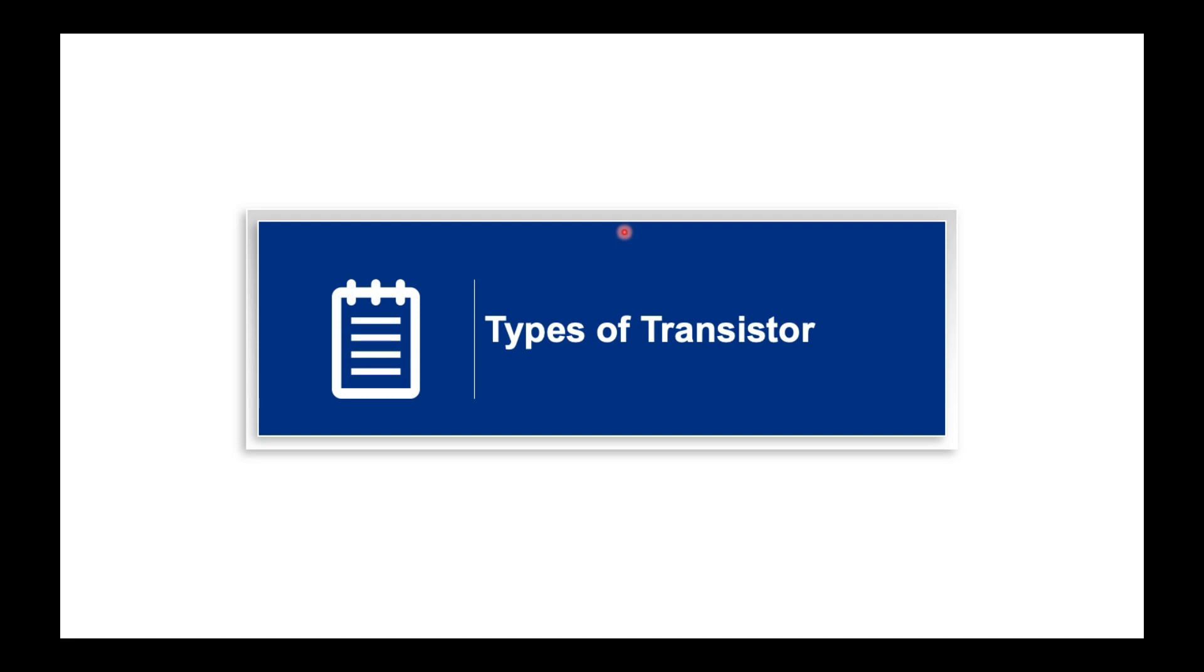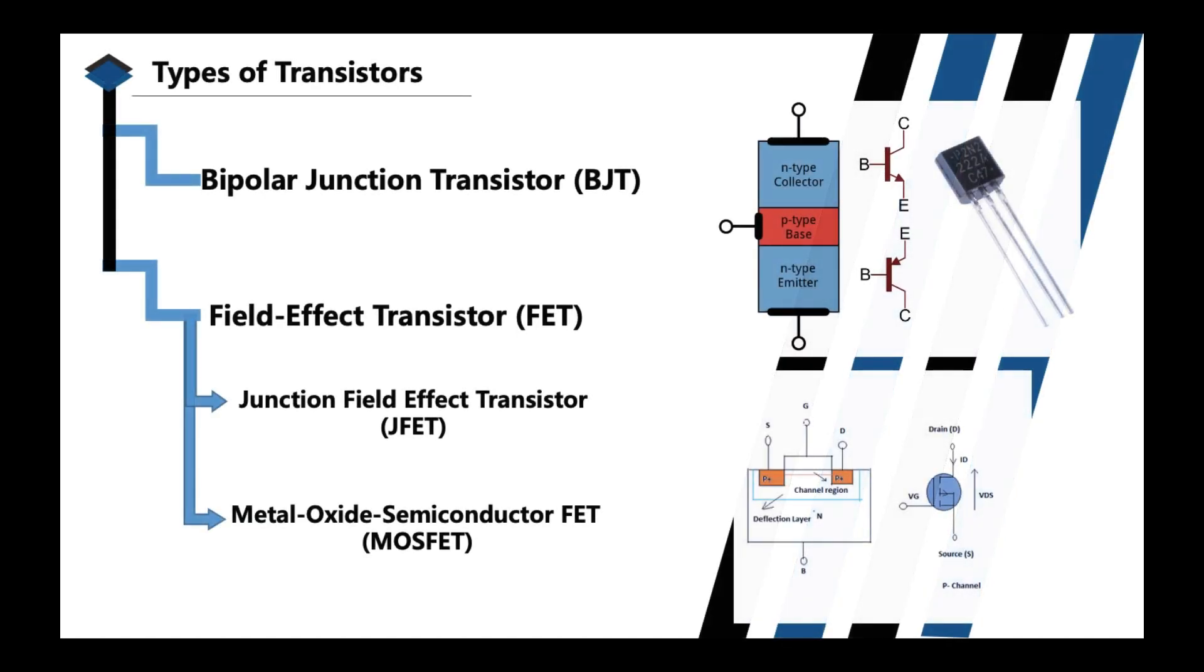Moving on, let's move to the types of transistors. There are two major classifications of transistors: we have the bipolar junction transistor or what we call BJT, and the other one is what we call FET or FET, the field effect transistor.